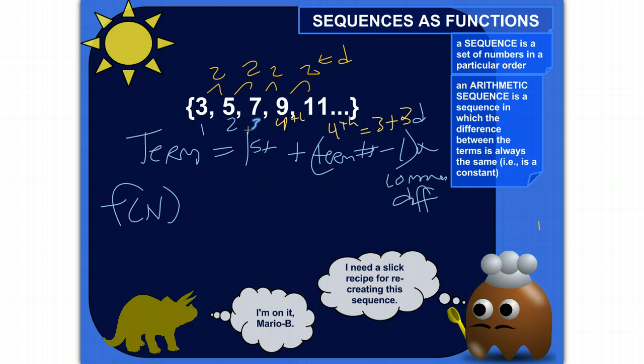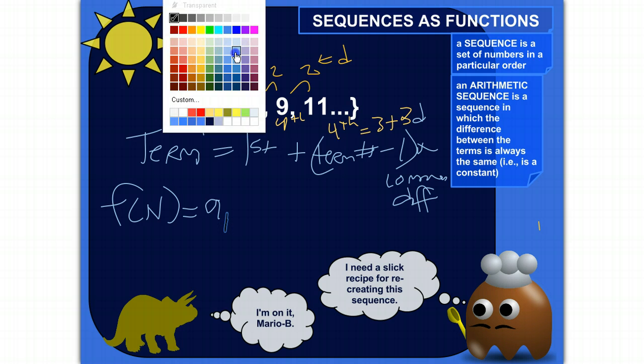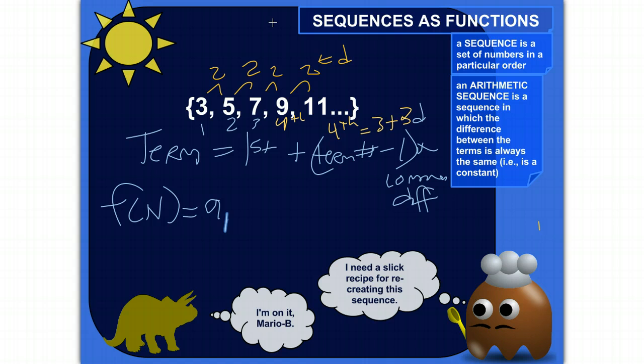So the term that I'm looking at, if I want to get the value of the term, then I would take the first term and we just call that A of 1, that's supposed to be 1, let me back up, A₁. Take the value of the first term and then you add the term number minus 1 number of times the common difference.